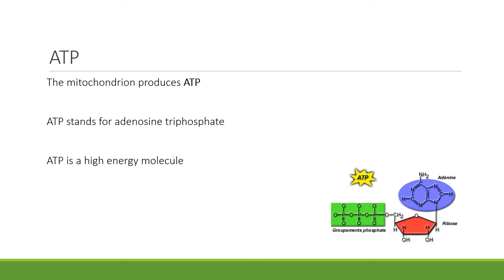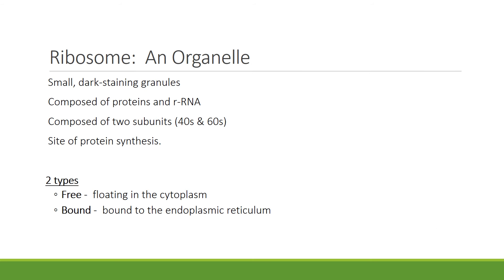ATP stands for adenosine triphosphate. It is named for the molecules that make it up. On the right you can see a picture of ATP. The ribosome is a very small, dark-staining granule. It is composed of proteins and ribosomal RNA, or rRNA. It is composed of two subunits, known as the 40S and the 60S. It looks sort of like a snowman. It is the place where protein synthesis occurs.